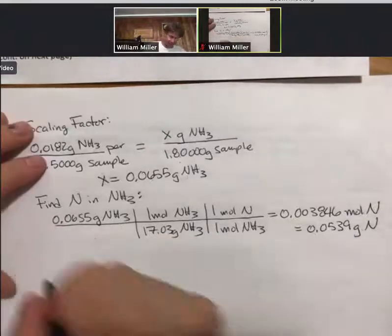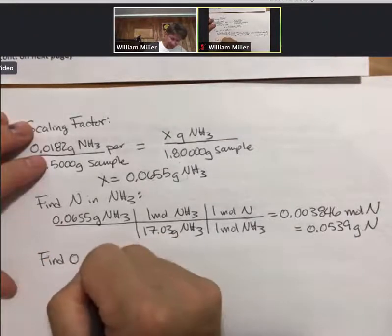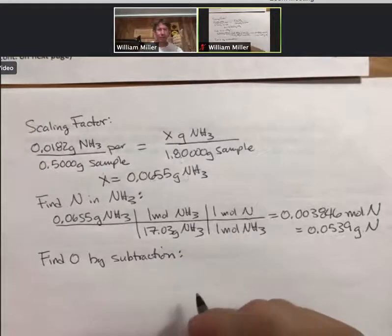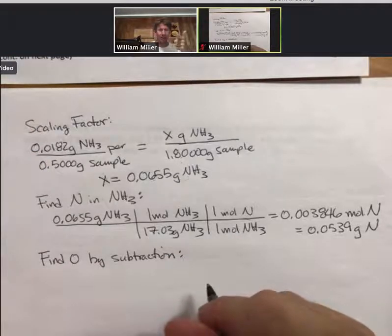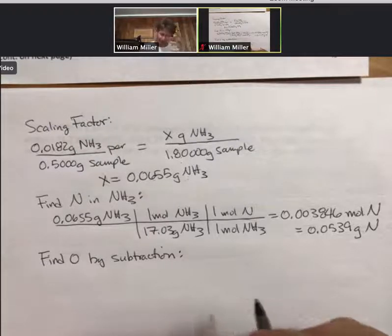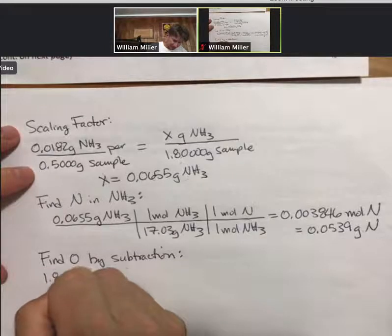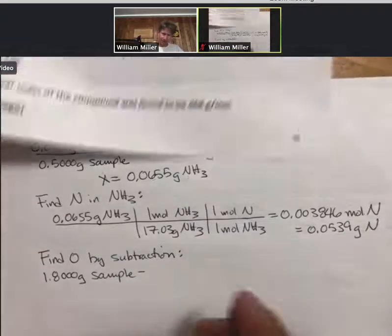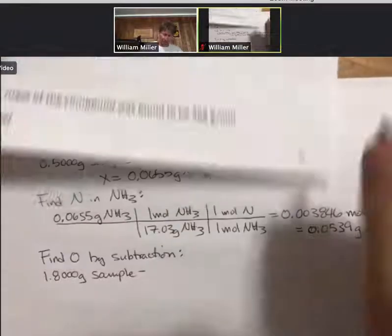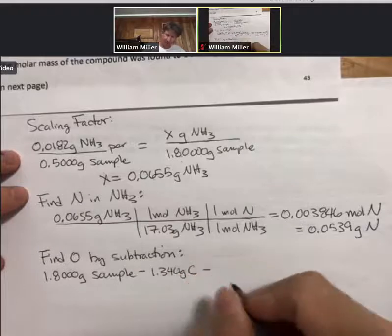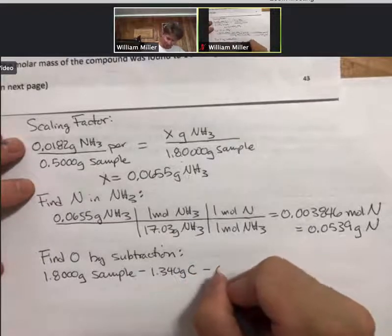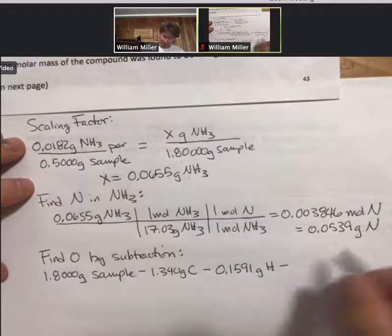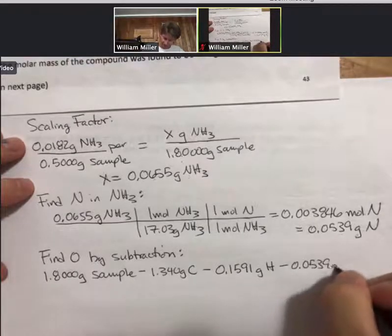Two more things to do. The next one is find oxygen by subtraction, meaning we now know that the 1.8 gram sample has a certain amount of grams of carbon, hydrogen and nitrogen. So let's subtract them. Take your sample, subtract 1.340 grams carbon, subtract 0.1591 grams of hydrogen, subtract 0.0539 grams of nitrogen.